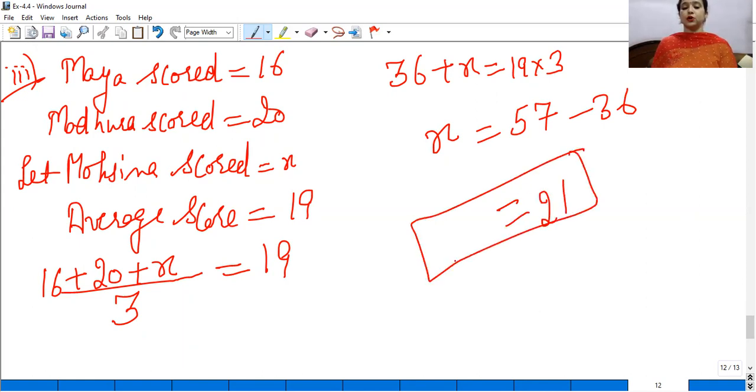So x is 57 minus 36. 7 minus 6 is 1, 5 minus 3 is 2. So, Mausina scored 21 marks. Clear.